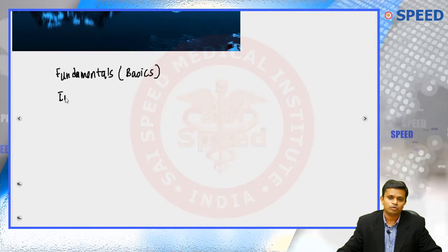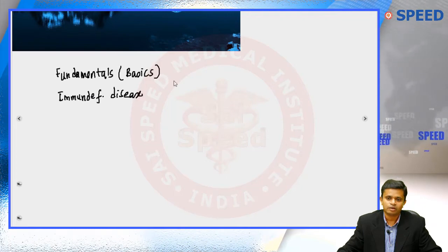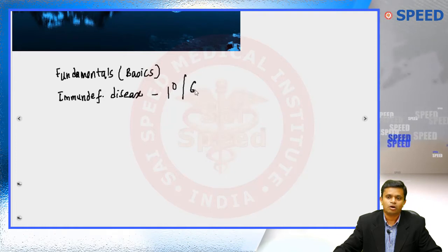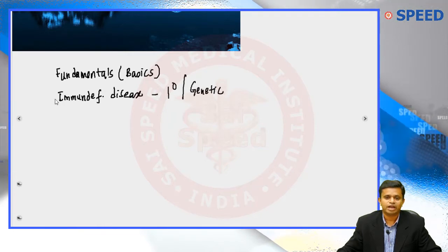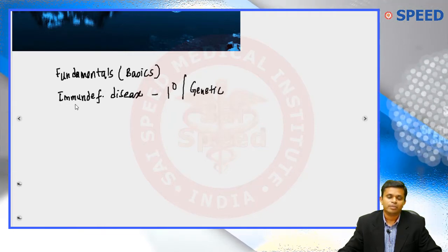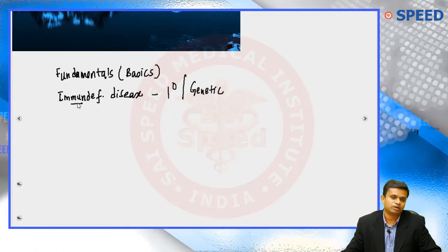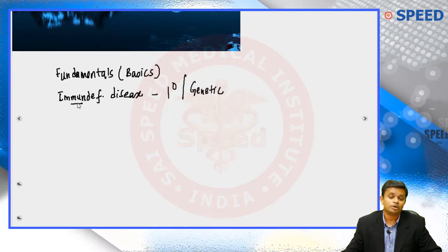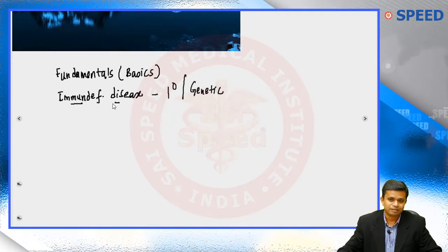The first topic is immunodeficiency diseases. I am not going into all the diseases, but I will focus on primary immunodeficiency disease — the genetic causes. The second compartment is acquired or secondary immunodeficiency, where HIV infection is the most important. Secondary may not be as important here; immunity-based questions will primarily come from primary immunodeficiency disease.